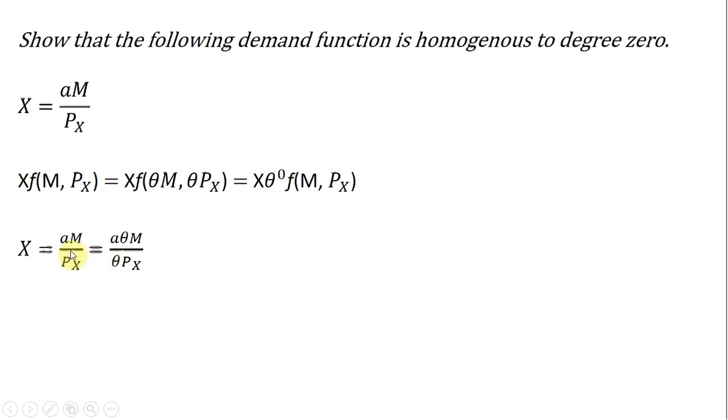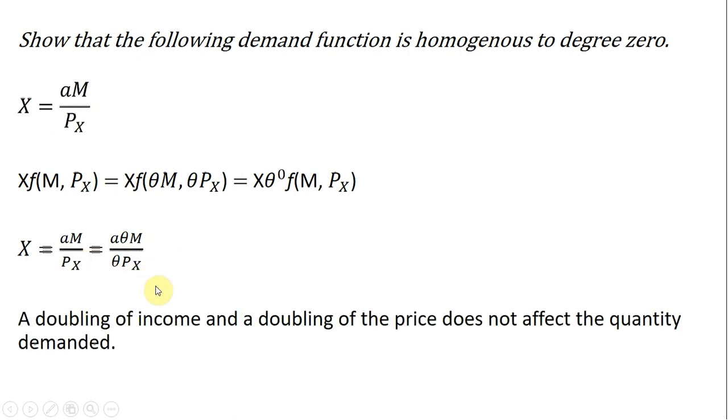Another way of wording this is that a doubling of income and a doubling of the price does not affect the quantity demanded when you have demand functions that are homogeneous to degree zero. Okay, I hope you found this video helpful.